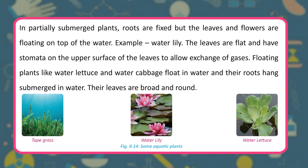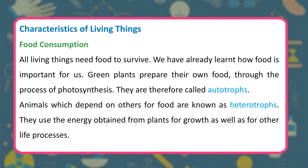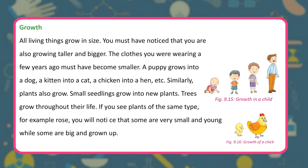Characteristics of living things. Food consumption: all living things need food to survive. Green plants prepare their own food through photosynthesis and are called autotrophs, while animals that depend on others for food are called heterotrophs. Growth: all living things grow in size. A puppy grows into a dog, a kitten into a cat, a chicken into a hen. Plants also grow — small seedlings grow into new plants, and trees grow throughout their life.